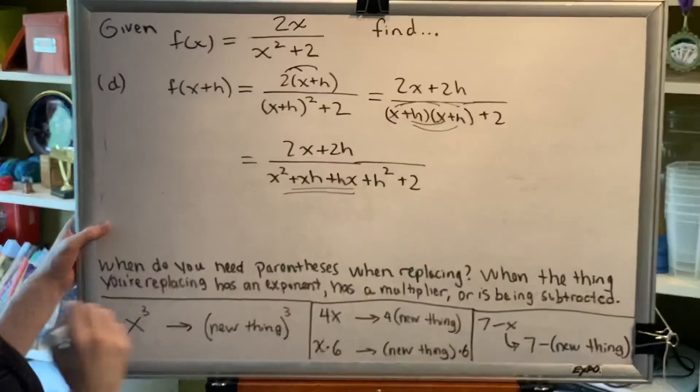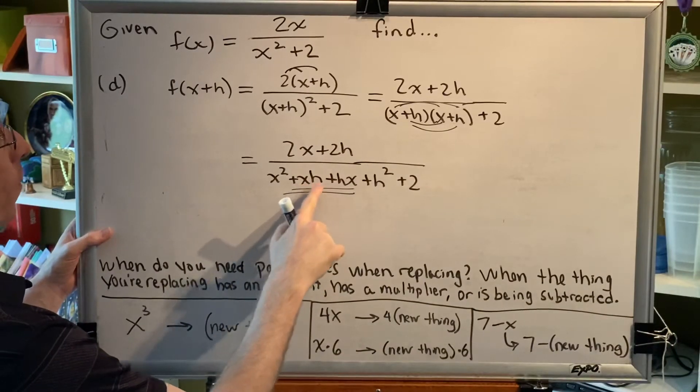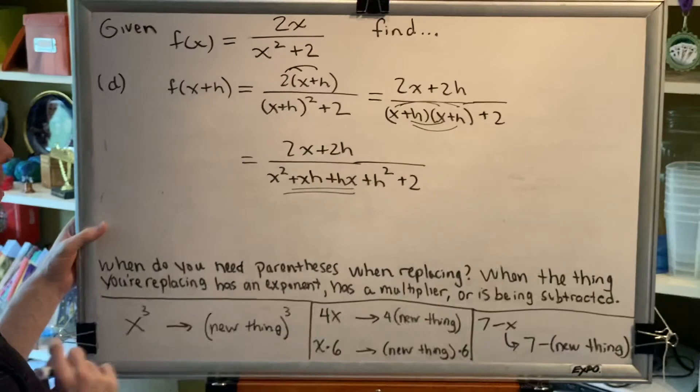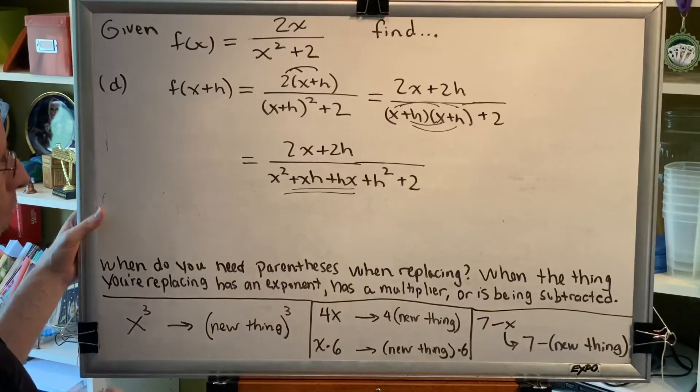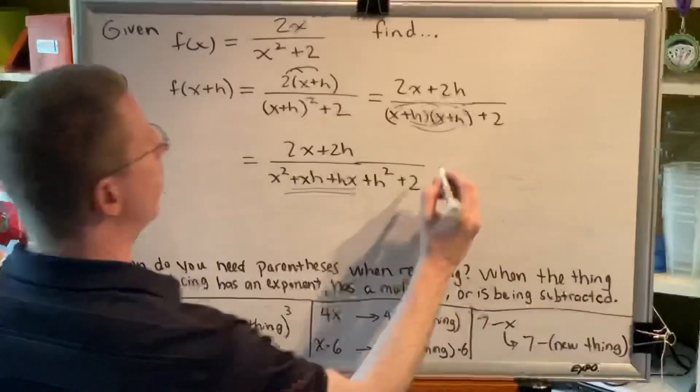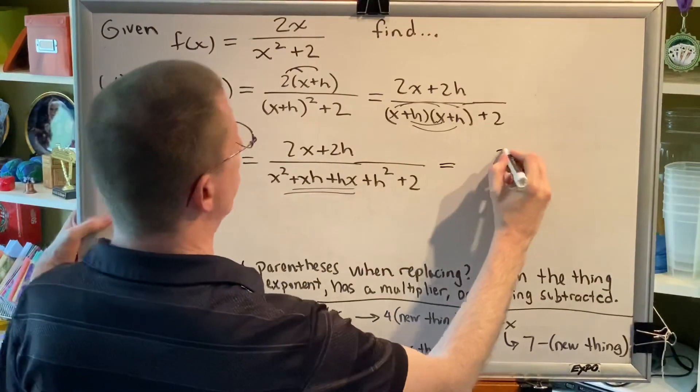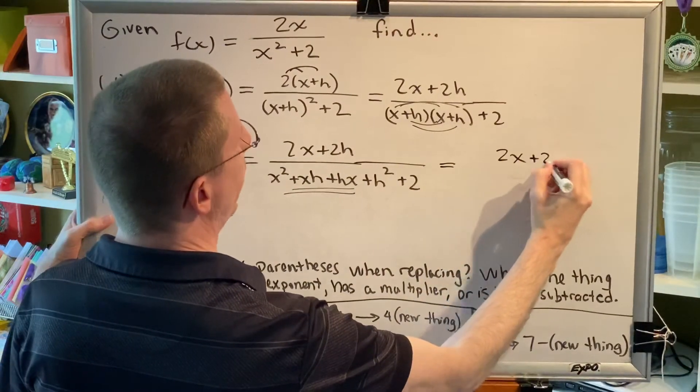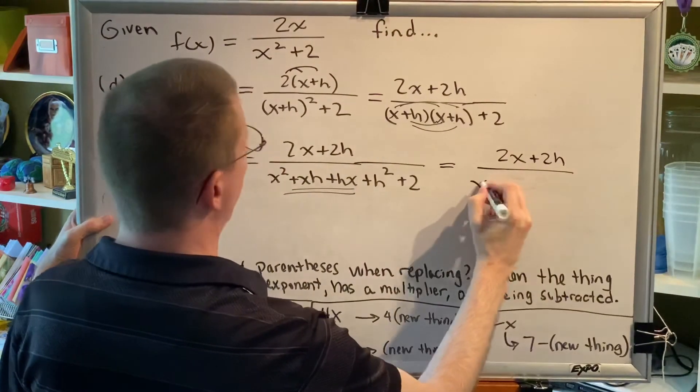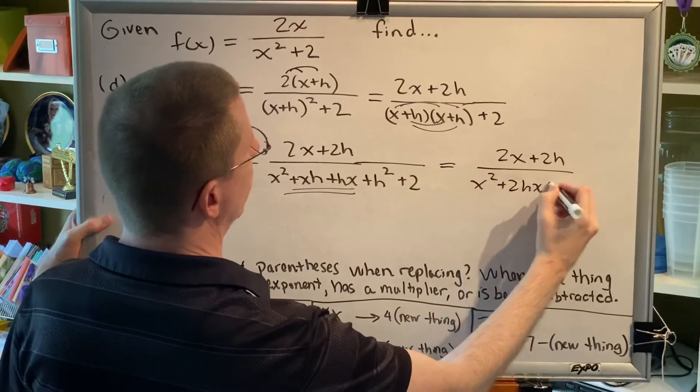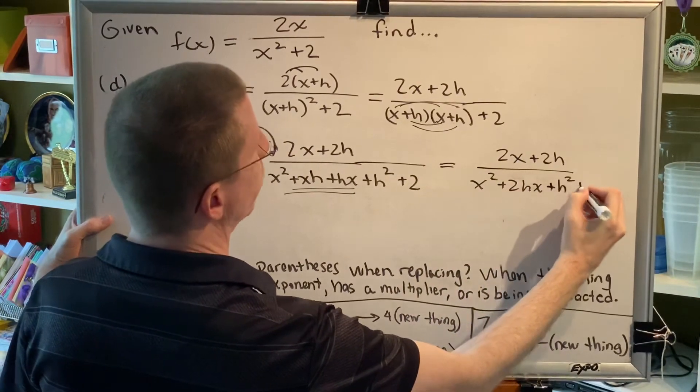These are actually the same. In fact, you could write hx for both of them, because we always write them in alphabetical order when you have multiple variables being multiplied. And so, combining these like terms, we're going to get 2x plus 2h in the top. And in the bottom, x squared plus 2hx plus h squared plus 2.